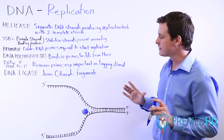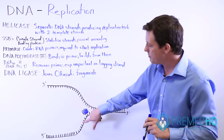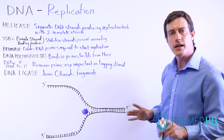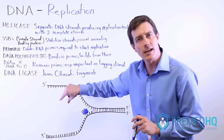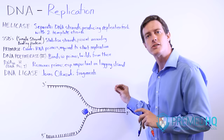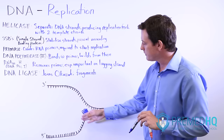Semi-conservative is an important vocabulary word. What it means is that when we build new strands, we build a new strand on each side. The original DNA becomes the template strand for each of these pairs. It's semi-conservative because each new double-stranded DNA segment contains half of the original DNA and half of the new DNA — not fully conservative, but semi-conservative.